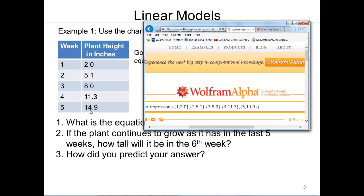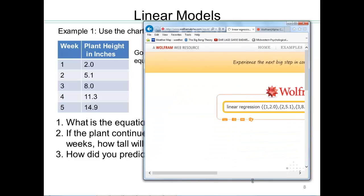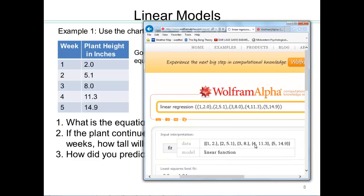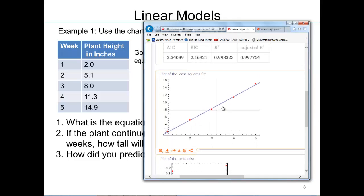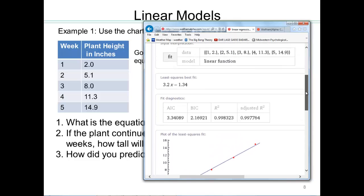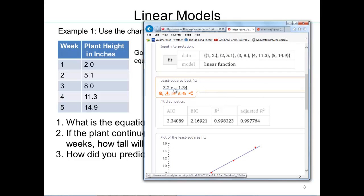So now if you press Enter, you will see the graph that shows up here. So there were your data points. You can always go to the coordinates, and it will tell you 1 and 2, 2 and 5.1, 3 and 8, 4 and 11.3, and 5 and 14.9. And this is the line that best fits it. And it will give you an equation of that line, which is the 3.2x minus 1.34.